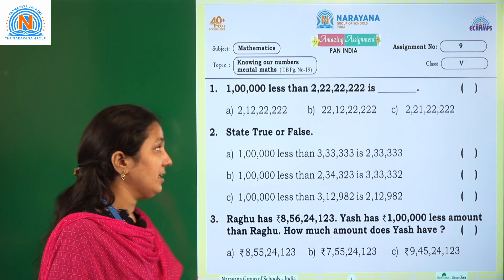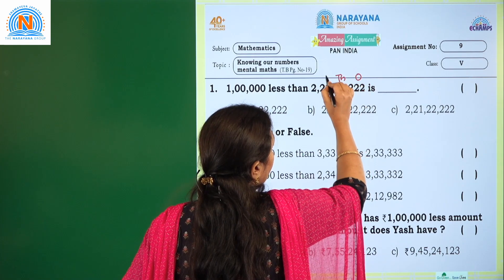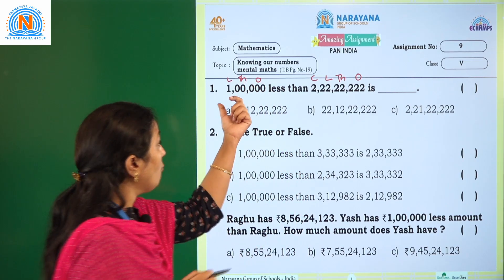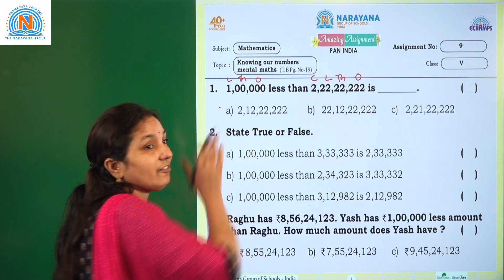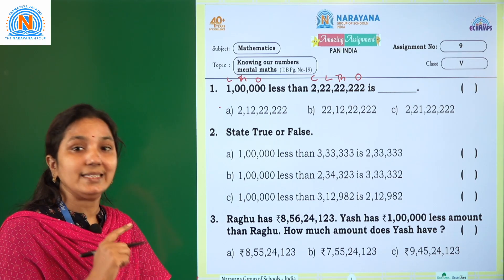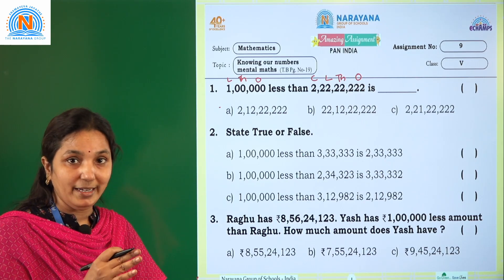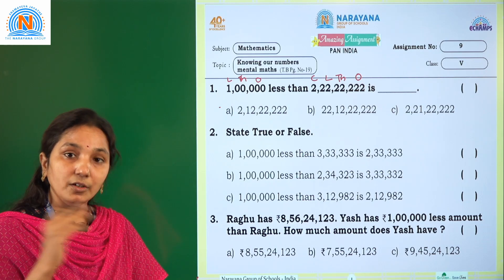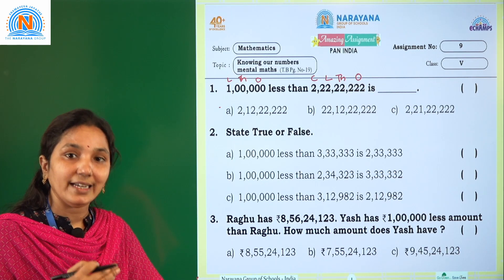Nothing but subtract from the given number. So here first we can mention the periods: ones, thousands, lakhs and crores. So here 1 lakh we have to subtract from the given number. You can observe that in 1 lakh, except in the 1 lakh place we have 1, remaining all places are zeros. So when we are subtracting 0 from any number, you will get that same number only. Suppose 2 minus 0 equals 2 only.